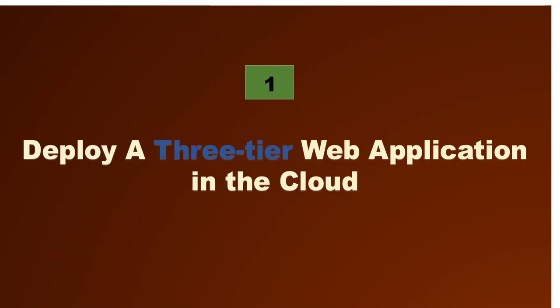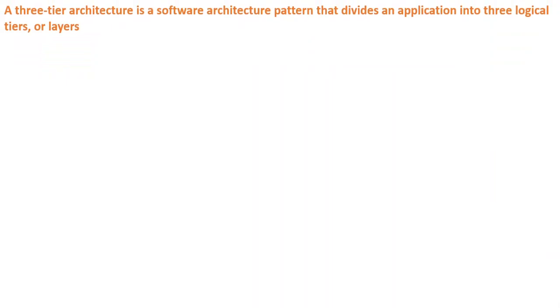The first one is deploy a three-tier web application in the cloud. Now, what is the three-tier architecture? A three-tier architecture is a software architecture pattern that divides an application into three logical tiers or layers. I'll be using these words interchangeably — I can call it tiers or layers. So let's see how these layers are.